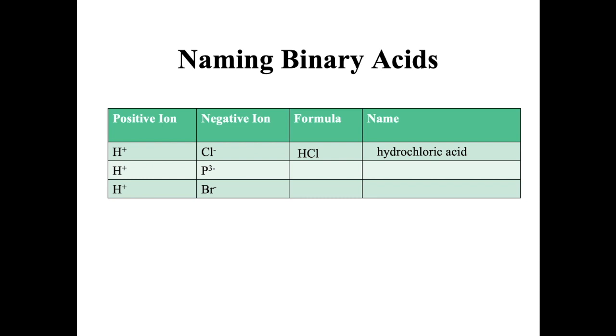Hydrogen and phosphide, they're going to combine in a three-to-one ratio. And that's going to be hydrophosphoric acid. Lastly, hydrogen and bromine will combine in a one-to-one ratio to form hydrobromic acid.